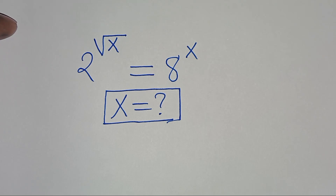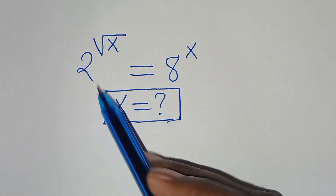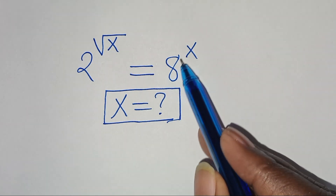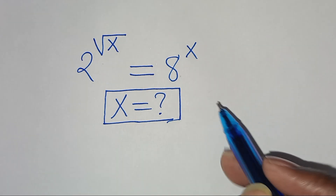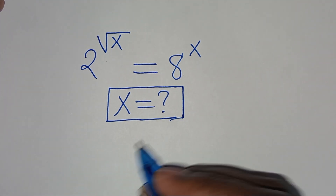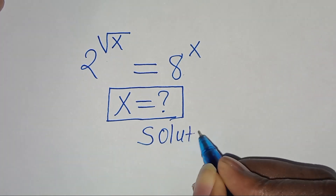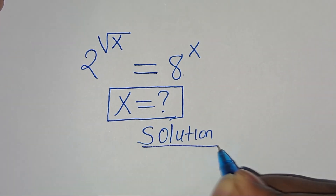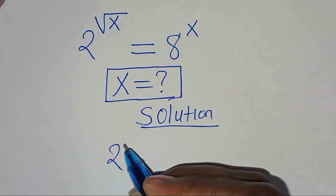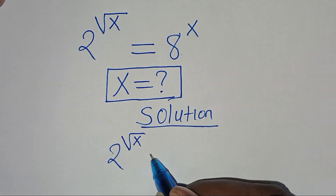Hello everyone, you're welcome to solve this nice exponential equation which is 2 to the power of square root of x, and this is equal to 8 to the power of x. So what is the value of x? Let's provide a solution from here.